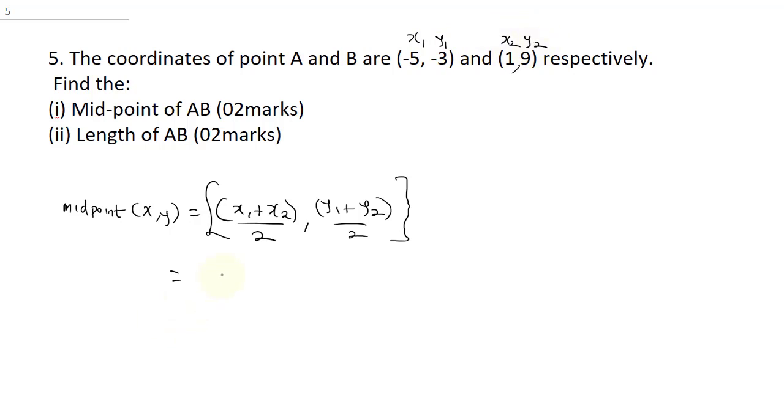So, this is going to be minus 5 plus 1 all over 2 comma, and this will be minus 3 plus 9 all divided by 2. So, this is going to give us, this will be 1 minus 5, that's 4 over 2. This is going to give us 2 comma. This will be 6 over 2.